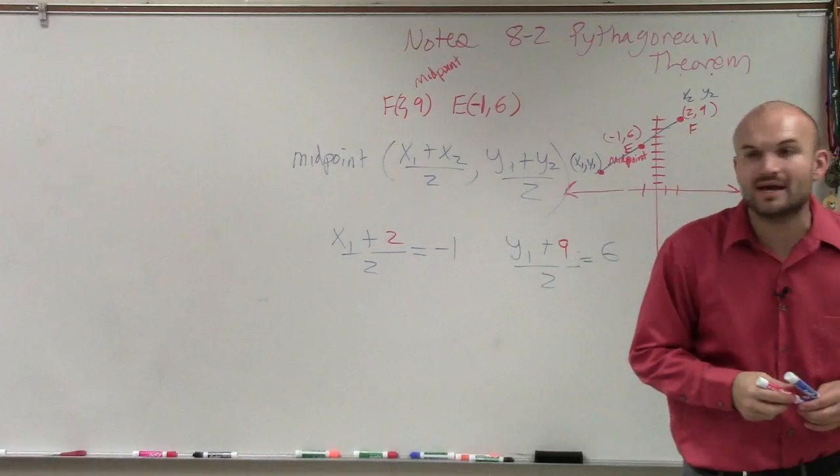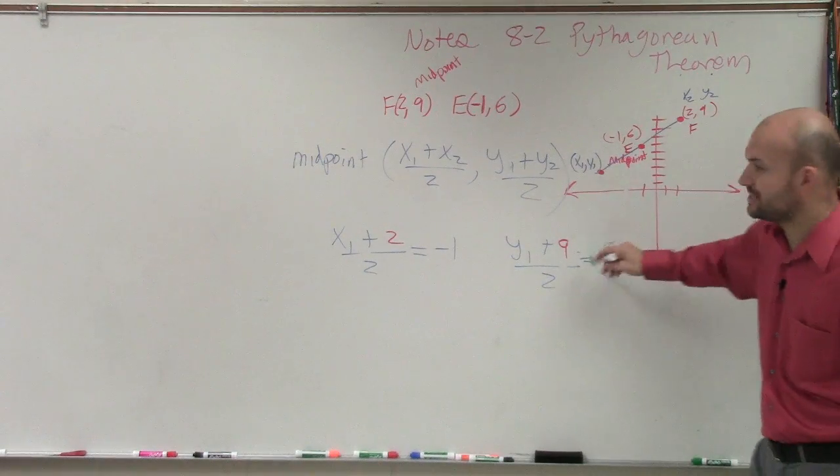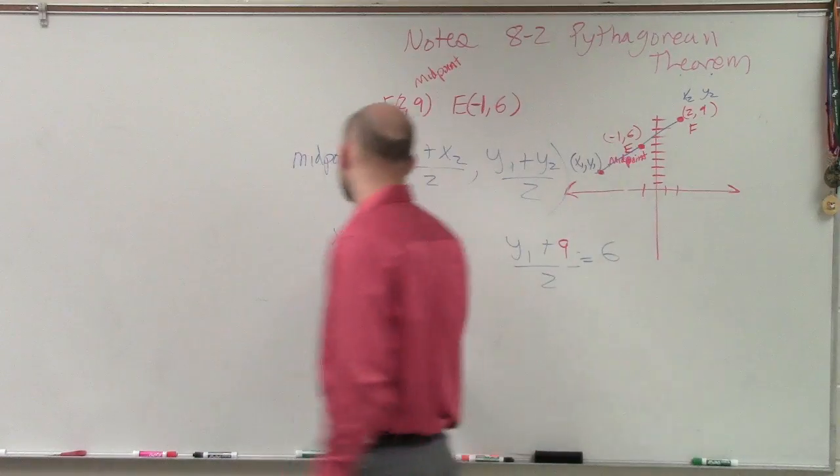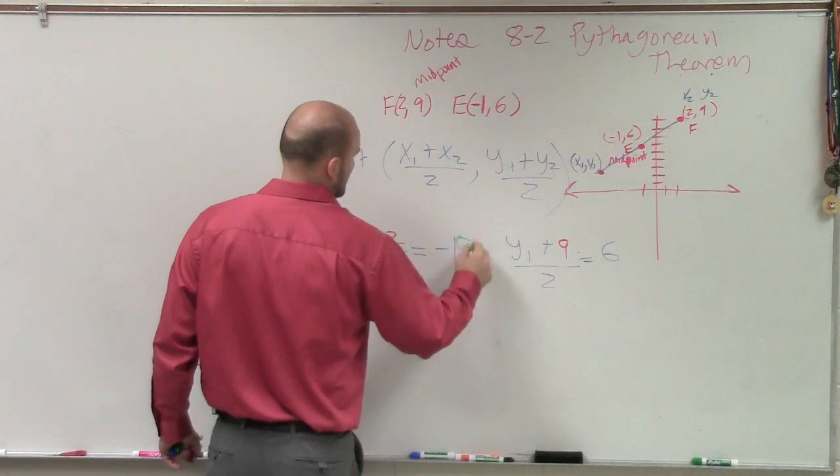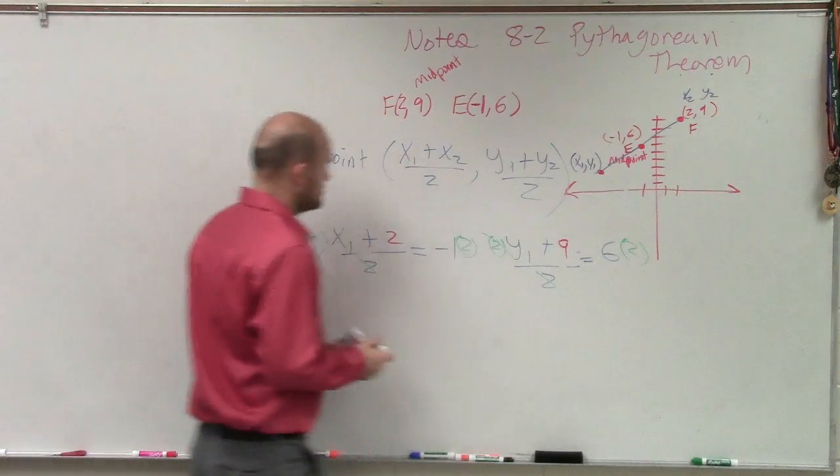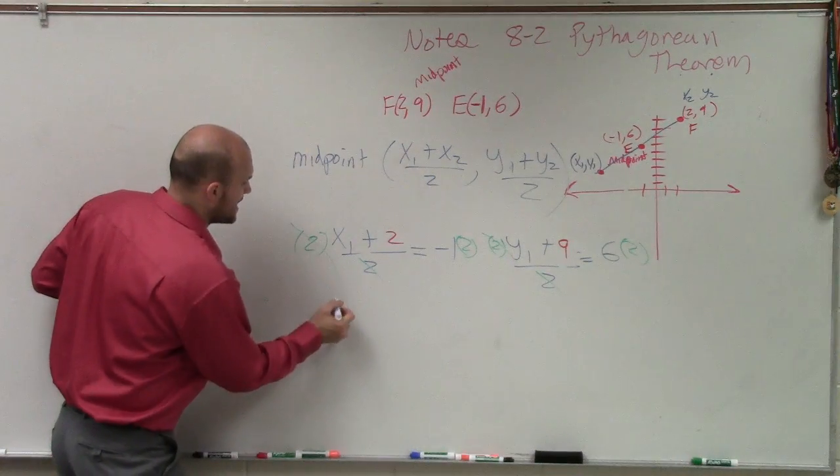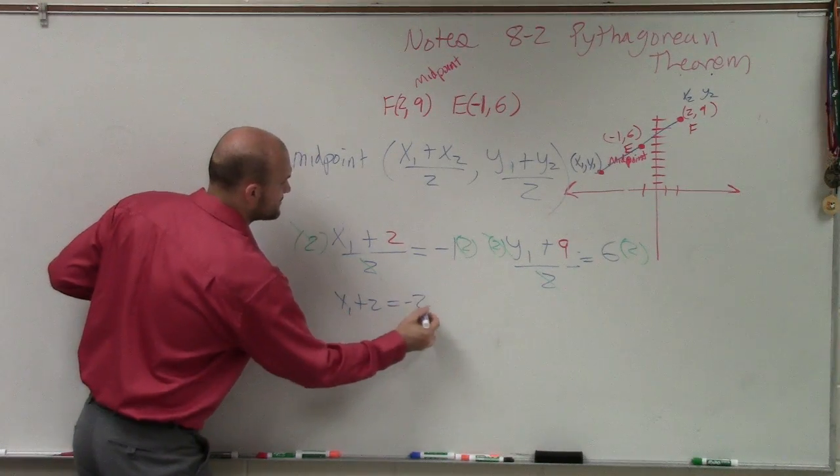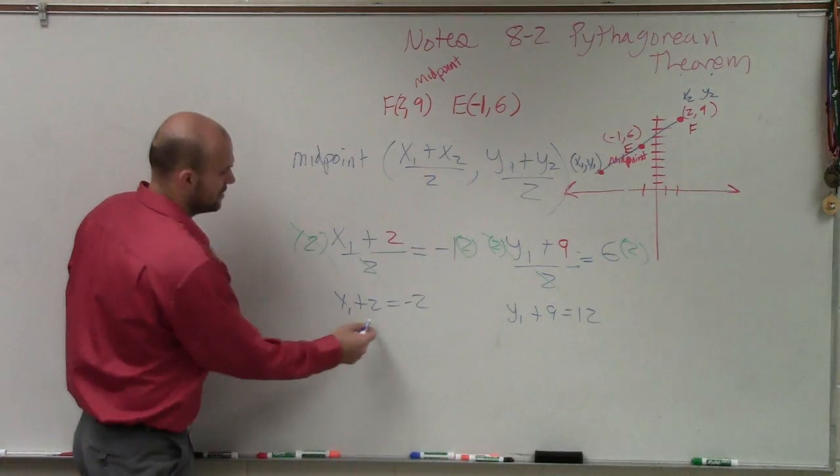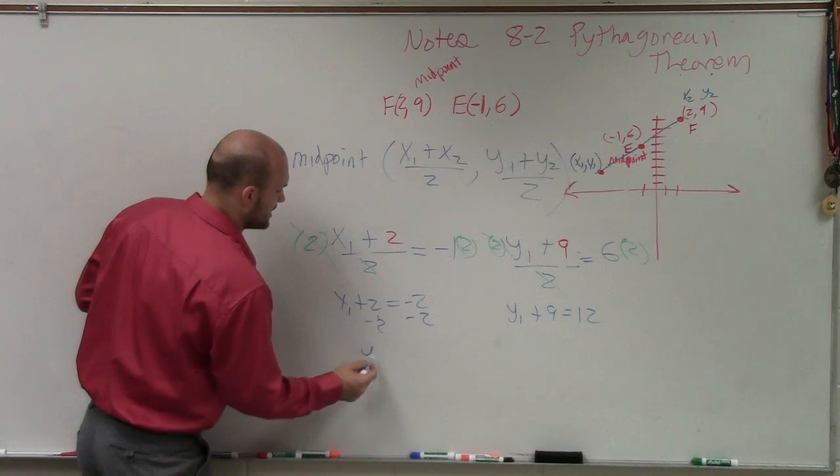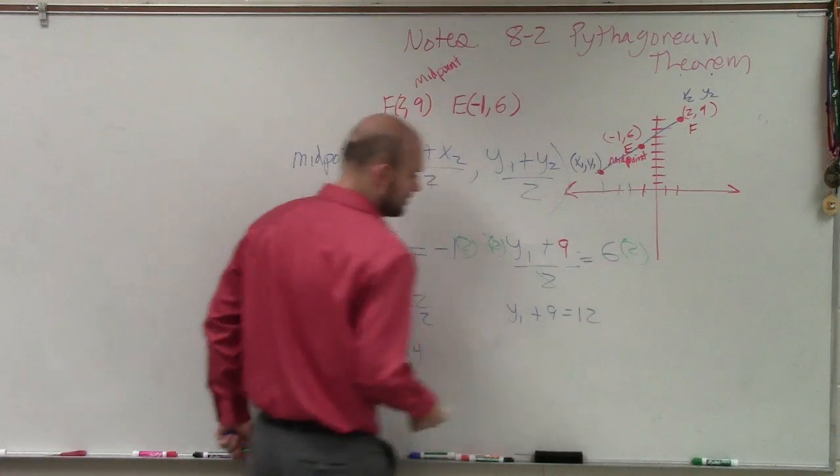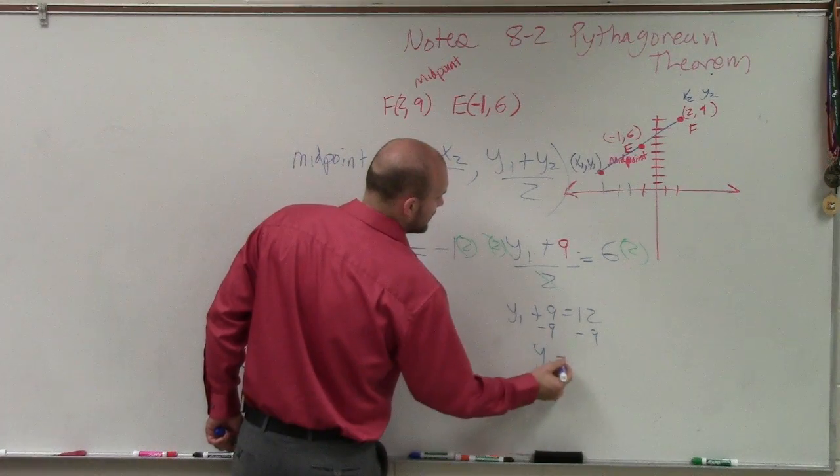So guess what? Now we have two equations that we have to solve, right? Now we need to say, well, crap, how do we solve these types of equations? And if you remember, if we have a fraction, what we always want to do is get rid of the fraction, right? So you multiply by 2 on both sides. Because 2 divided by 2 goes to 1. So therefore, here I'll just have x1 plus 2 equals a negative 2. And here I have y1 plus 9 equals 12. Well, subtract 2. I get x1 equals negative 4. 1, 2, 3, 4. Subtract 9. y1 equals 3. 1, 2, 3. Pretty close.